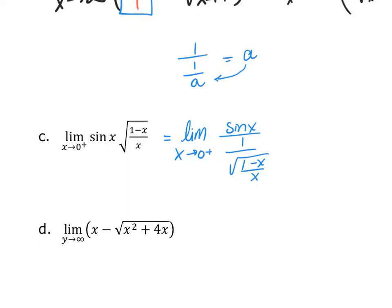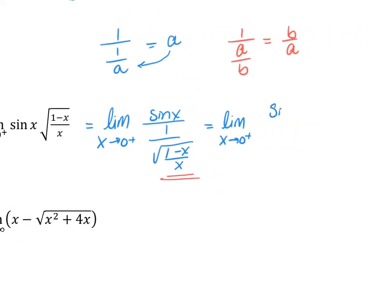Using another algebra rule: if I have 1 over (a/b), that's the same as b/a. So I rewrite this portion as the reciprocal, keeping it in the denominator. This gives the limit as x approaches 0 from the right of sine(x) over the square root of x/(1−x). We have the rule that the square root of (a/b) equals the square root of a over the square root of b, so I can split those apart.